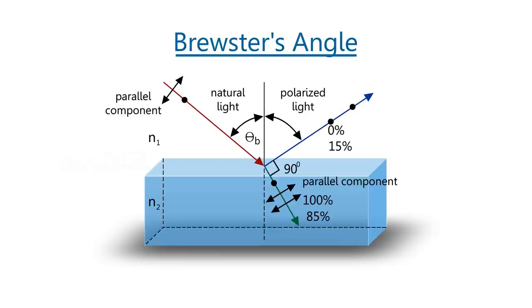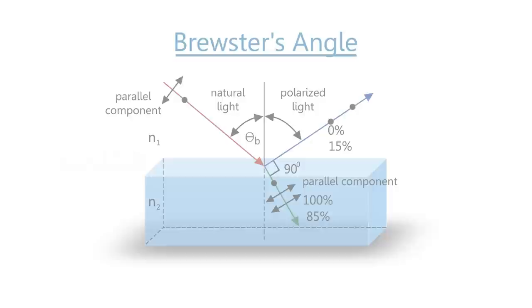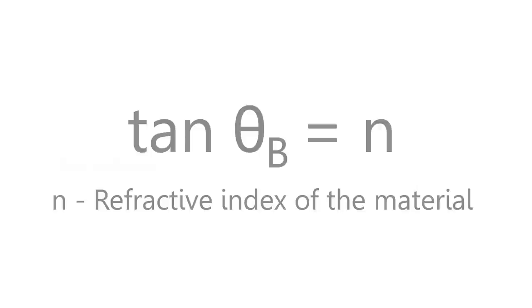the reflection coefficient of p component goes to zero. In this condition, the reflected and transmitted beams are orthogonal to each other. By Snell's law, tan θb equals n, where n is the refractive index of the material.